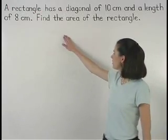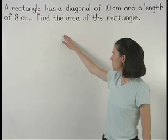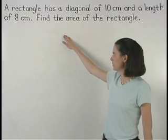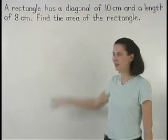A rectangle has a diagonal of 10 centimeters and a length of 8 centimeters. Find the area of the rectangle.